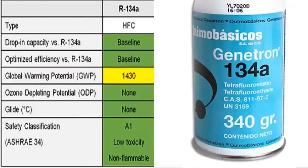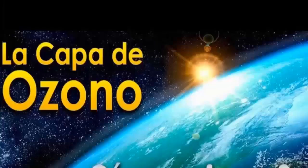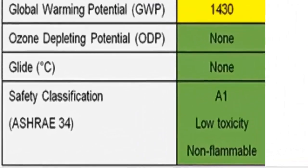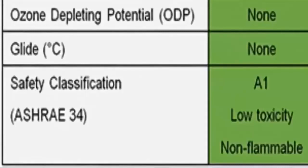These are the main features of R-134A that you should know about. 1. R-134A does not harm the ozone layer. 2. R-134A is not flammable, classified as A1. 3. R-134A is non-toxic, classified as lower toxicity.